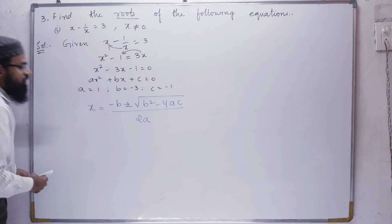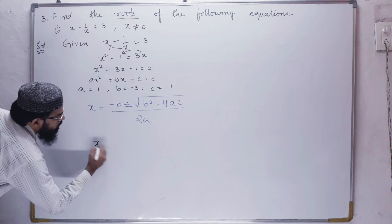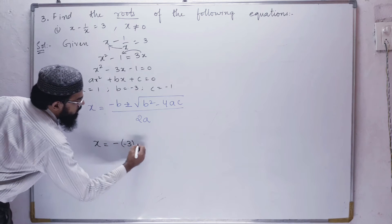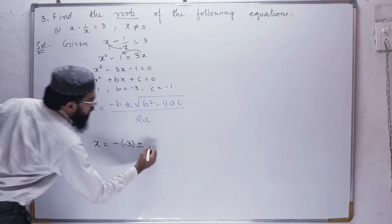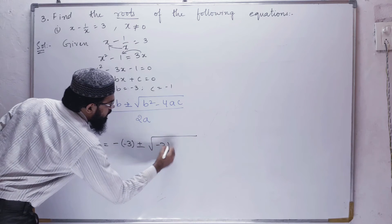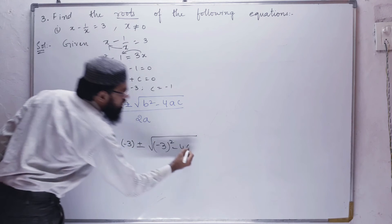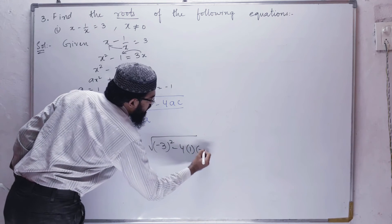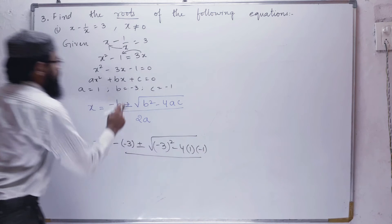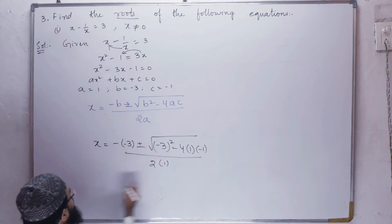Next, let us substitute the values. x equals minus b — b is minus 3 — so minus of minus 3, plus or minus under root of b squared, that is minus 3 squared, minus 4 times a, a is 1, times c, c is minus 1, divided by 2a.